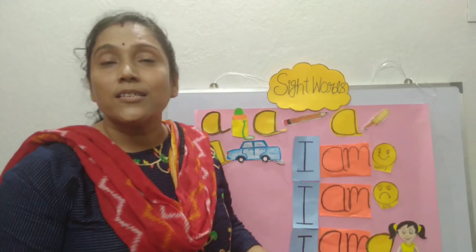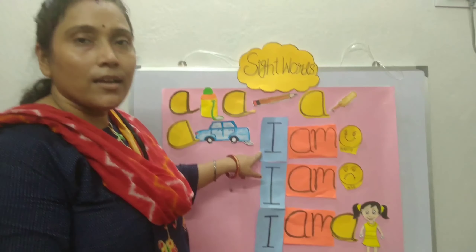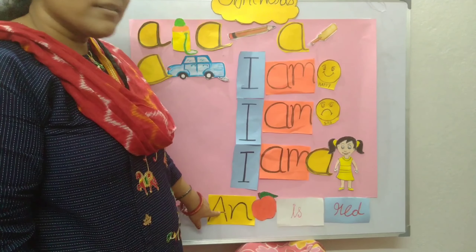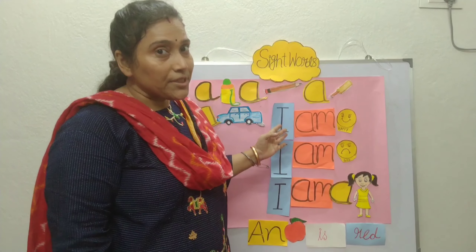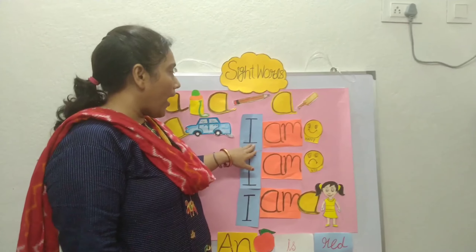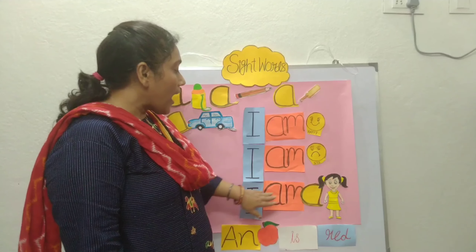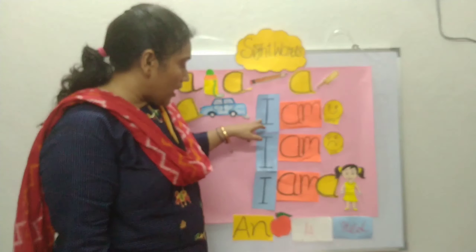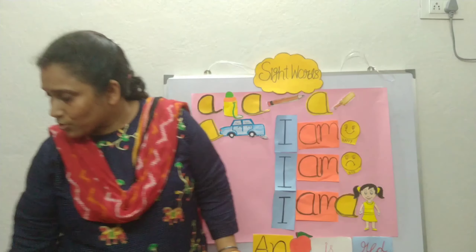So how many sight words have we learned today? Five sight words: a, I, am, and, is. So children, can you see how easily I have made sentences? Please repeat after me: I am happy, I am sad, I am a girl. When you are talking about yourself, you will say 'I am.' We have learned four sentences today.